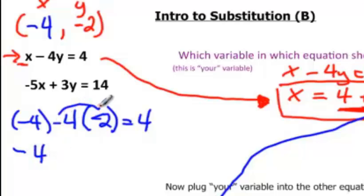So negative 4, and then negative 4 times that negative 2 would be positive 8. And negative 4 plus 8 would be 4. So we know it satisfies the top equation. And if it satisfies the top equation, we should feel pretty confident it's going to satisfy the bottom one. You can check it on your own if you want to.